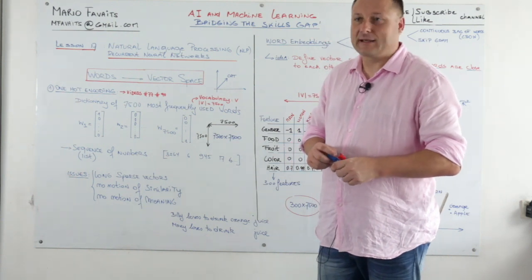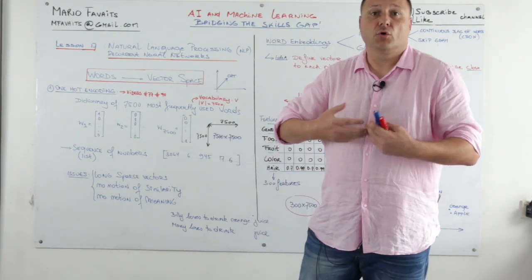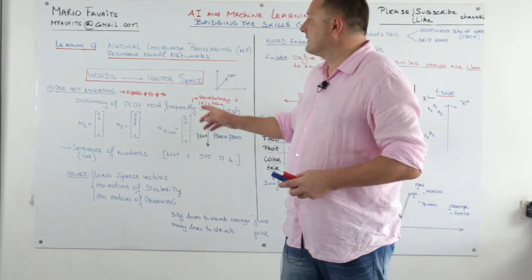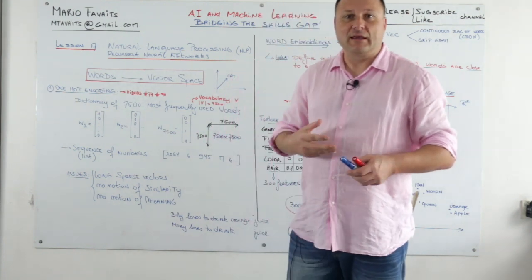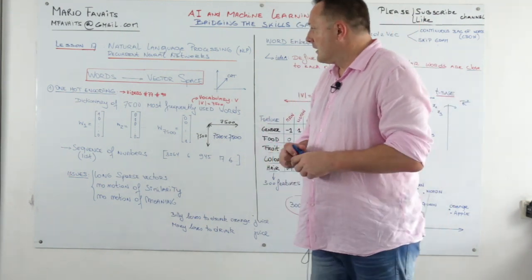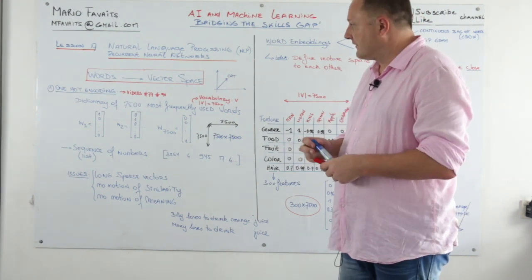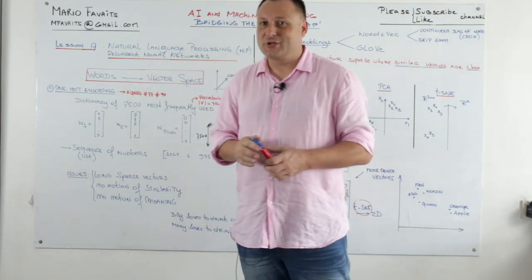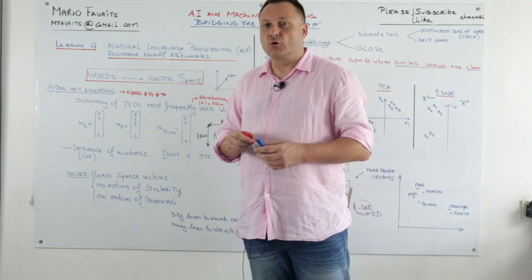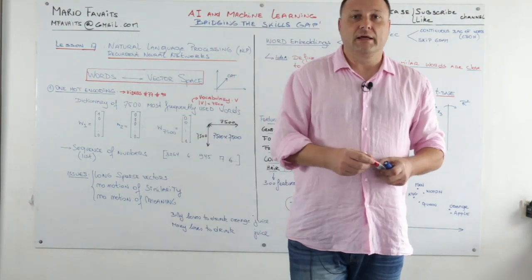Welcome back to lesson 17. We ended with a goal we wanted to achieve: to convert words to vectors. Words need to be represented in a vector space. There are many ways to convert words into vectors, and we've seen one methodology which I would call clumsy — not very efficient — and that is one-hot encoding.